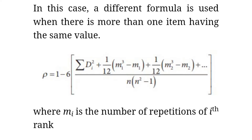In this case a different formula is used when there is more than one item having the same value. Rho equals 1 minus 6 times [sigma D² plus (1/12)(M1³ − M1) + (1/12)(M2³ − M2) + ...] divided by N(N² − 1). Here M1, M2, M3, M4, etc. represent the number of times each rank has been repeated.